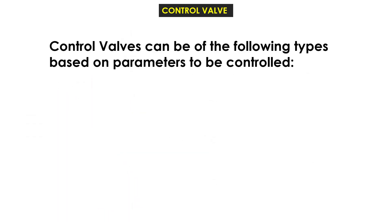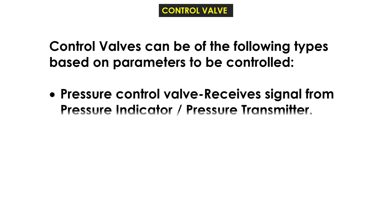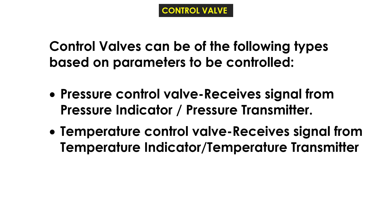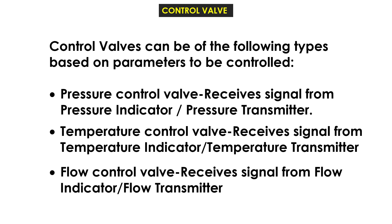Control valves can be of the following types based on the parameter to be controlled. A pressure control valve receives signals from a pressure indicator or pressure transmitter. A temperature control valve receives signals from a temperature indicator or temperature transmitter. A flow control valve receives signals from a flow indicator or flow transmitter.